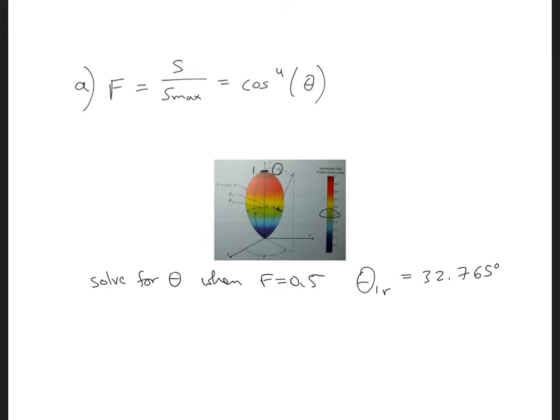since the beam is symmetrical, we can just say that the half power beam width is 2 times theta 1r, which is 65.53 degrees.